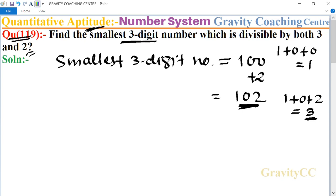So 102 is divisible by 3. Therefore, the required number is equal to 102.